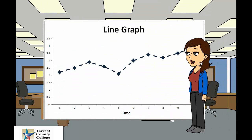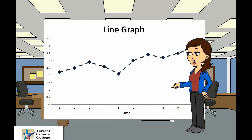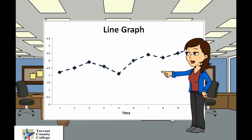Line graphs are used to track changes over short and long periods of time. When smaller changes exist, line graphs are better to use than bar graphs. Line graphs can also be used to compare changes over the same period of time for more than one group.